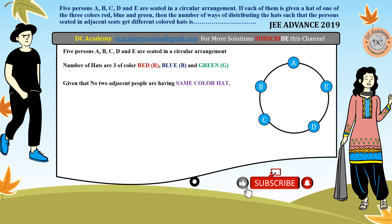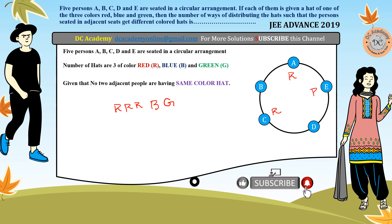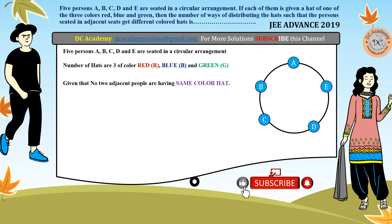I'm talking about the repetition of one color hat. For example, if I choose three red color hats, assuming that all five people are distributed like three red, one blue, one green — if I place red at A, the next red must be placed at C, and the next at E. But still, two consecutive persons will have a red hat, so therefore we should not have three red hats.